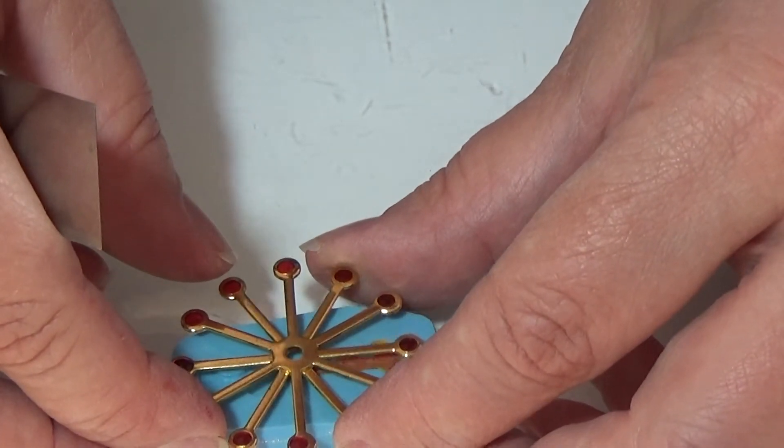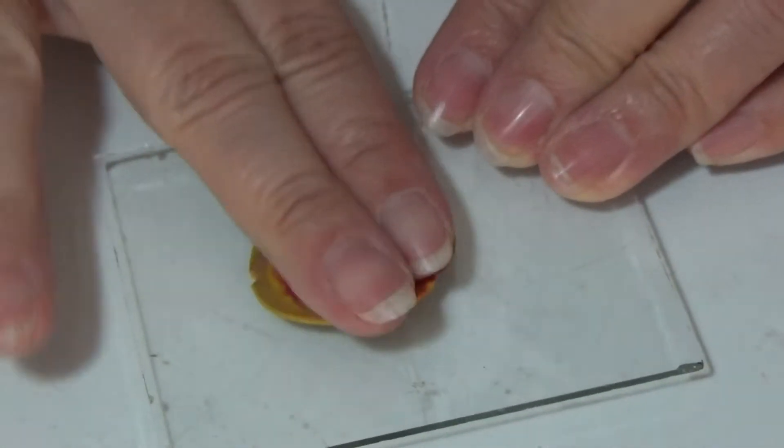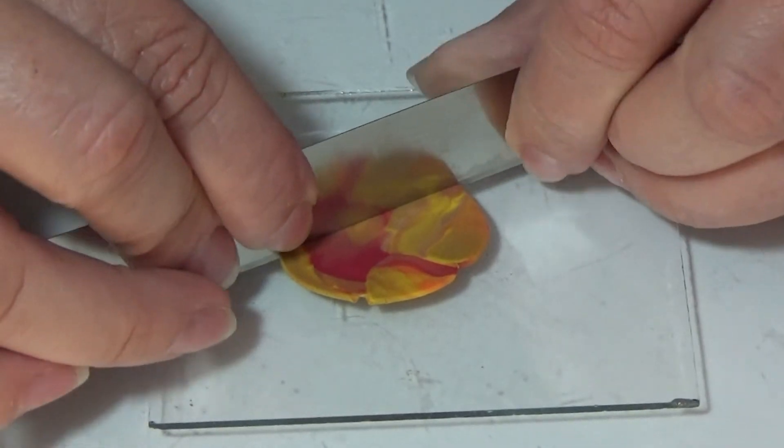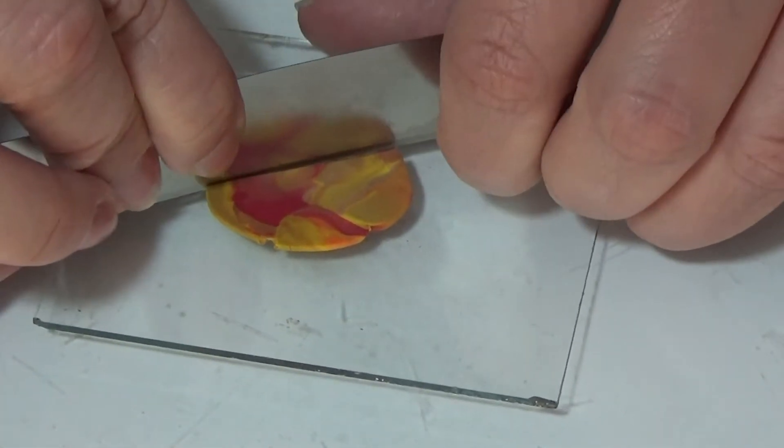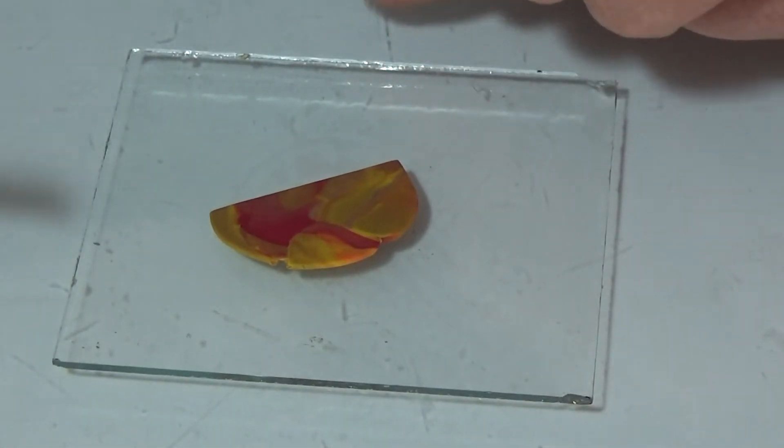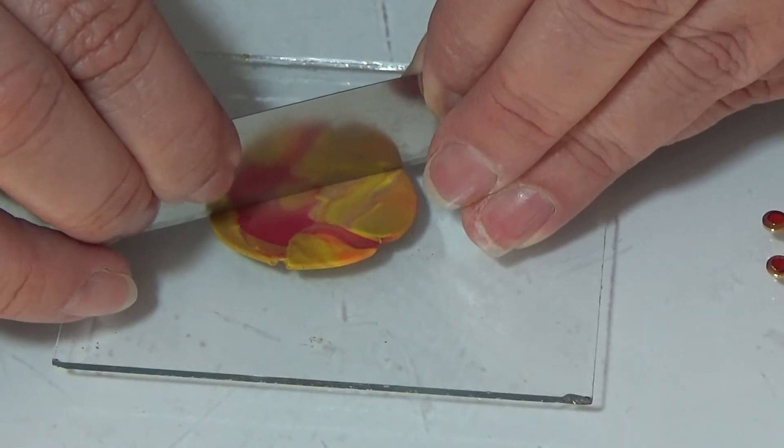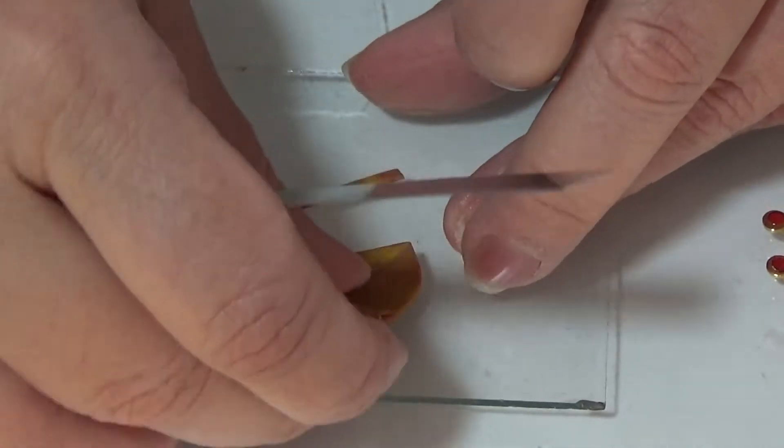For the long one, I put the clay through my pasta machine on a setting of five and I'm just cutting out a small arrow because I don't want it to be as big as the other one that I just made in my mold.